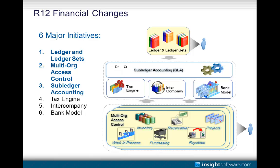The first one is ledgers and ledger sets. Set of books have been replaced with ledgers in Release 12 — we no longer have an SOB, we now have a ledger and a ledger set. In a set of books there were the three C's: currency, calendar, and chart of accounts. With ledgers we've added a fourth C: accounting convention.